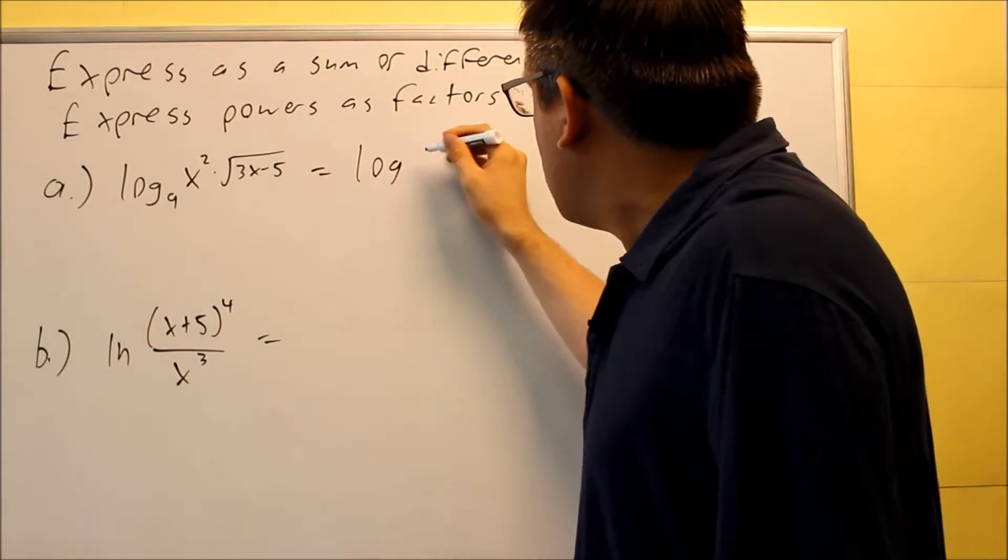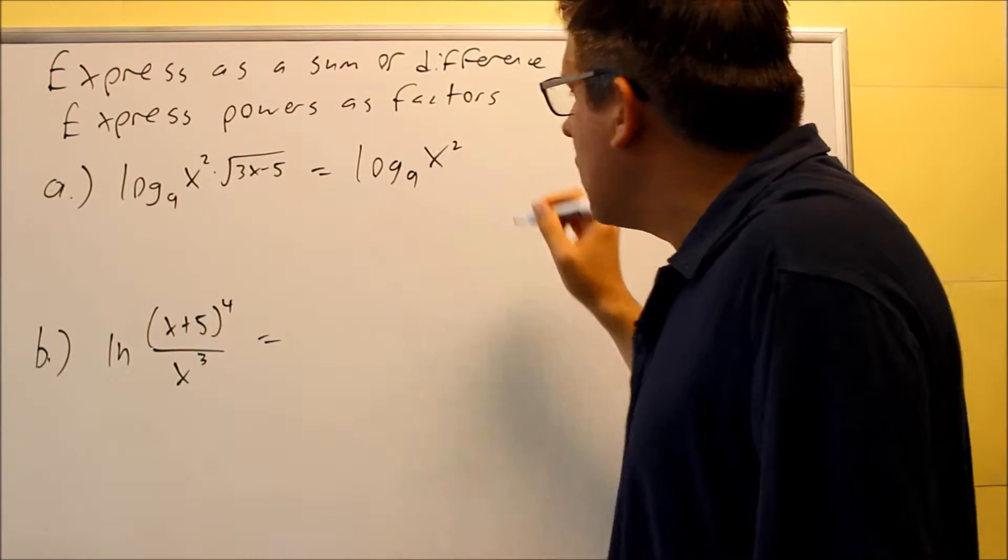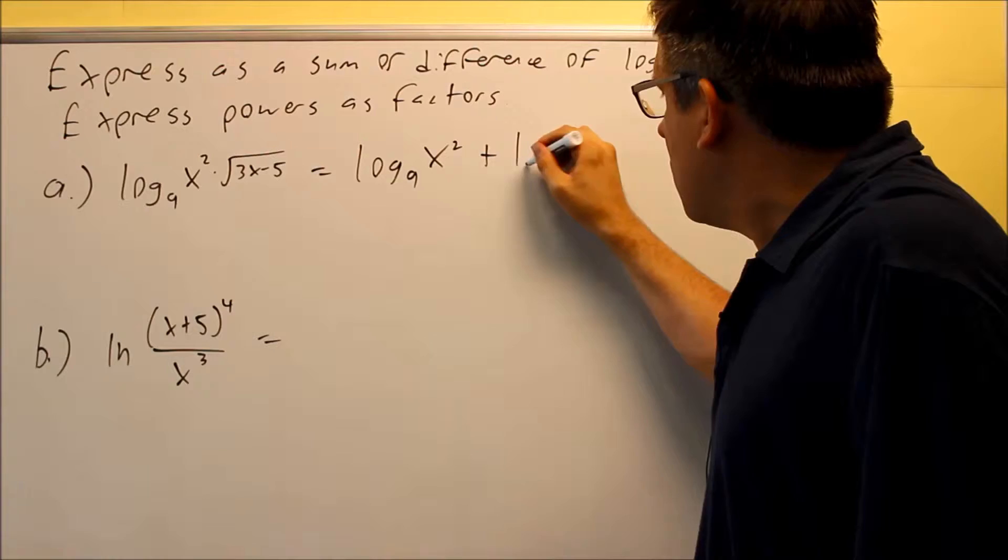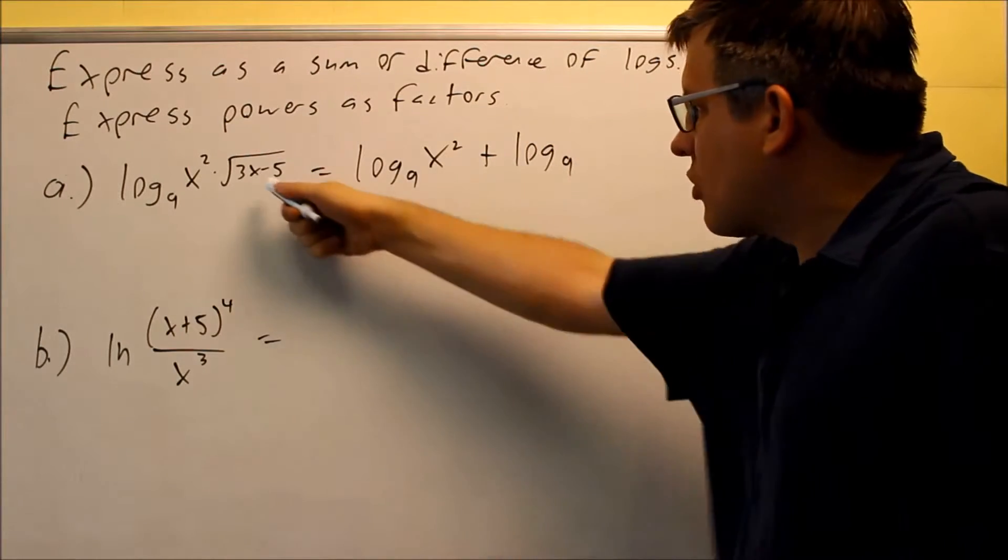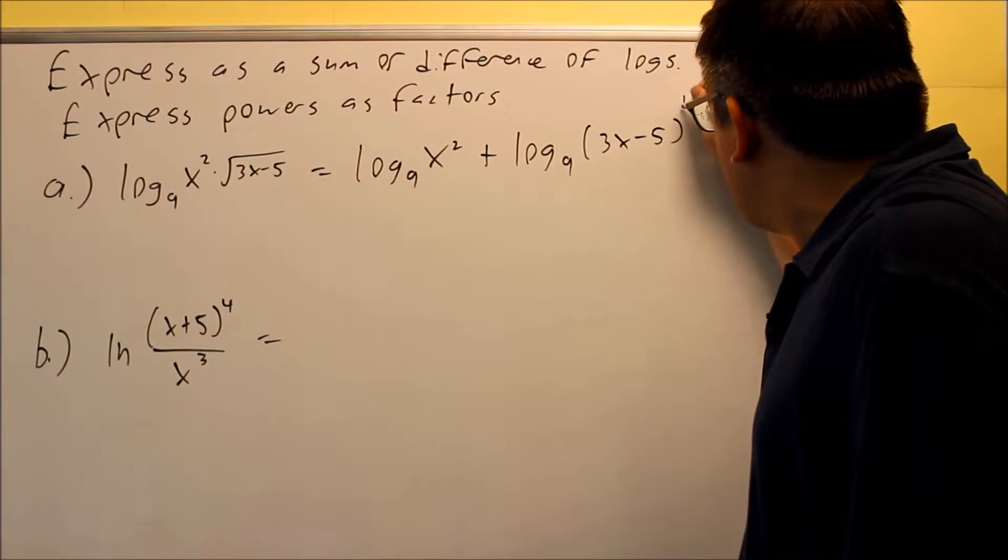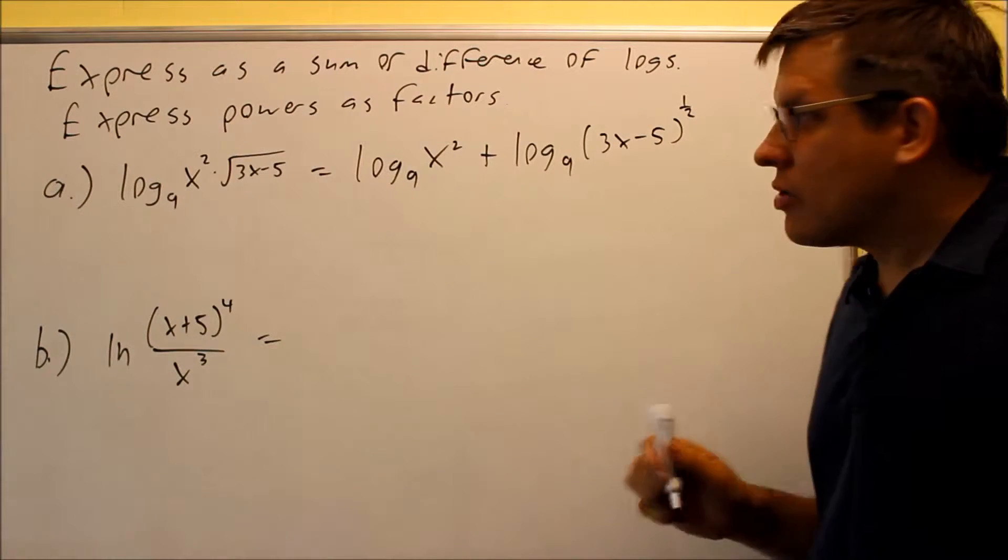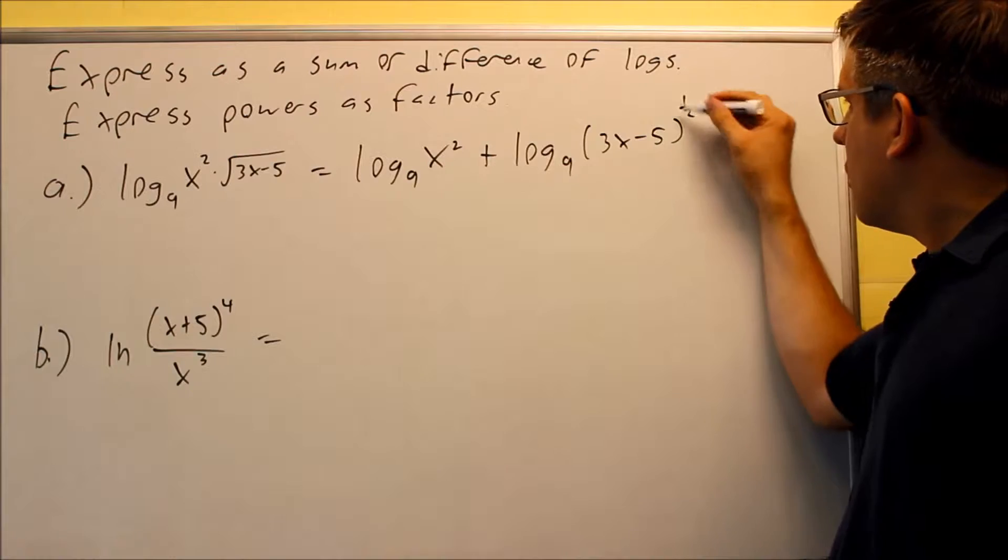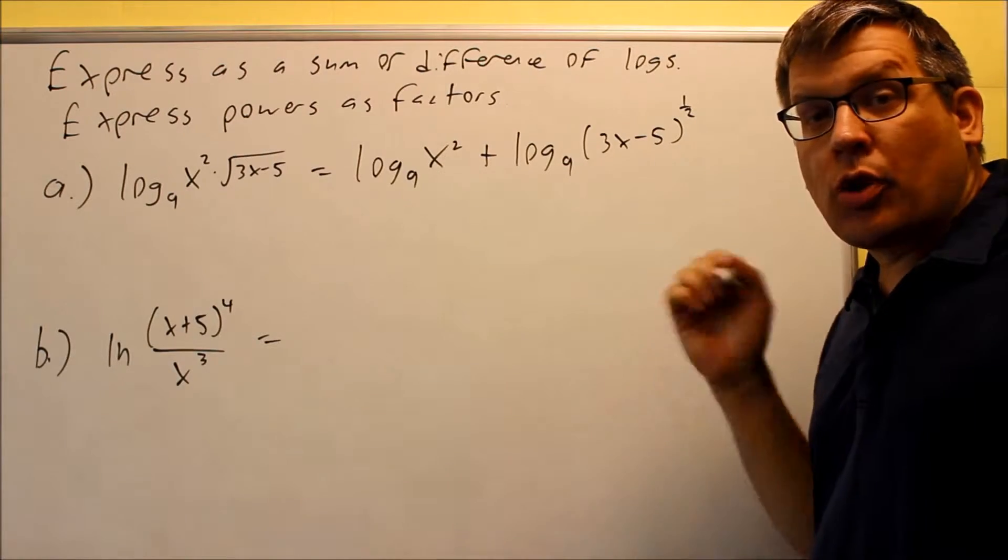So we're going to do log nine of x squared, and then we're going to do plus log nine of the square root. Now instead of the square root, I'm going to write that instead as three x minus five to the one half power. Square roots can always be written as fractional powers, so we want to do that.